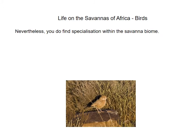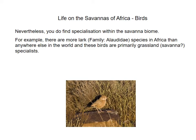Despite this patchiness, we do find specialization in savannah habitat when it comes to birds. For example, in the lark family — the clapper lark being an example — this family in Africa is far more abundant and has far more species than anywhere else in the world. Lark species are primarily grassland birds and may be considered savannah specialists. In Southern Africa alone there are 25 different lark species.